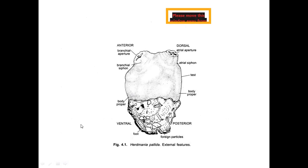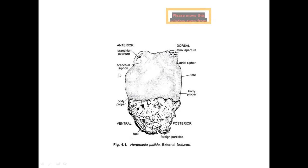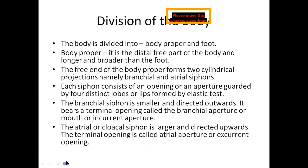Looking at the organism, there are two important portions you can visualize: the foot portion and the free end — the body proper. There are two siphons and two openings present. We call them the branchial aperture and atrial aperture, through which proceed what are known as the branchial siphon and the atrial siphon.